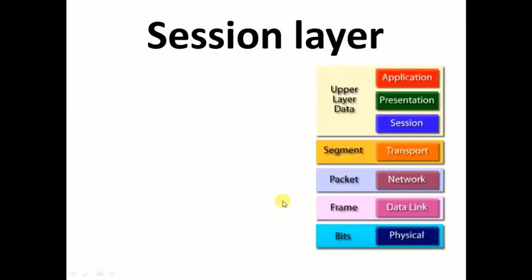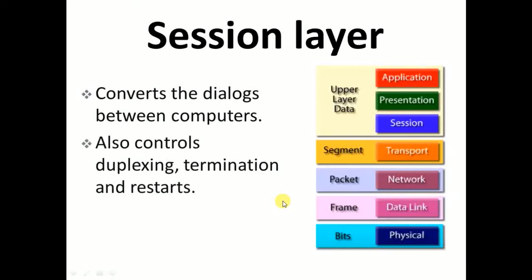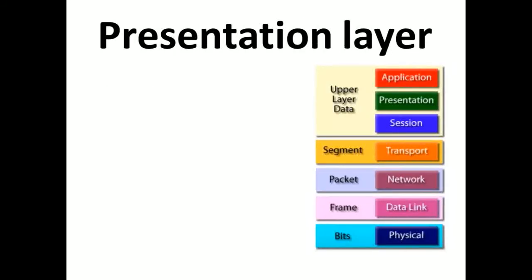After the transport layer, the next layer is the session layer. Session layer controls the dialogues between computers. It also controls duplexing, termination, and restarts. This layer allows users on different machines to establish sessions between them. The datagrams are called upper-layer data. In the session layer, streams of data are marked and resynchronized properly so that the end of messages are not cut and data loss is avoided.